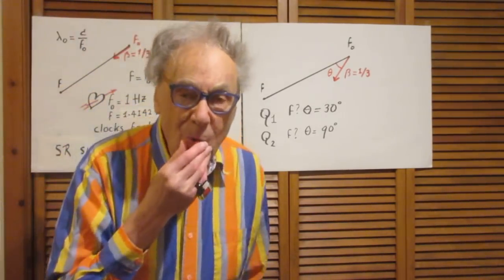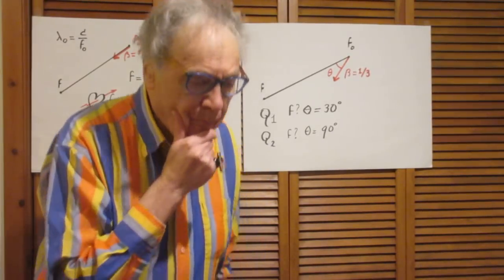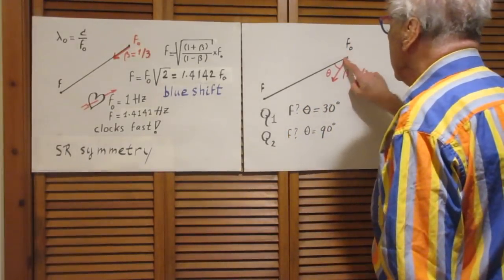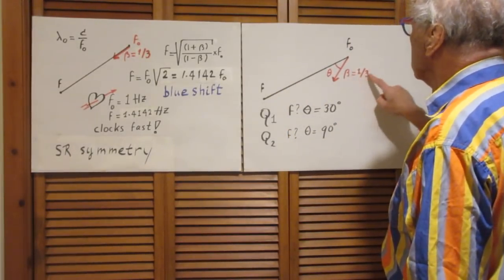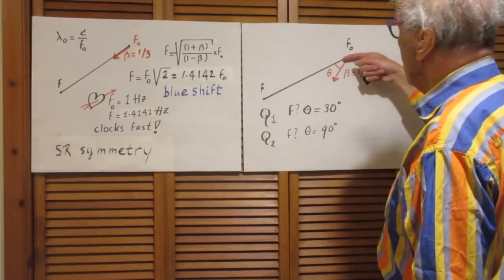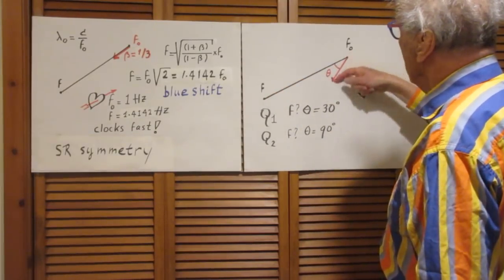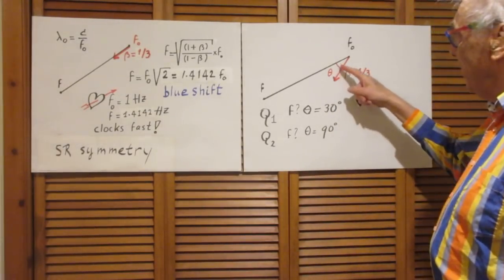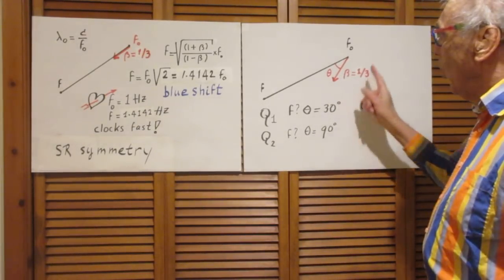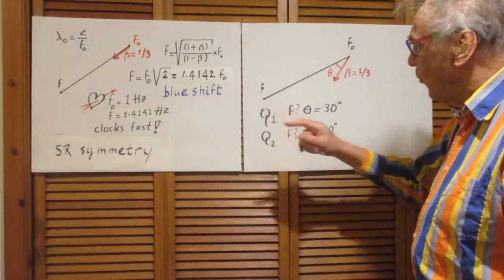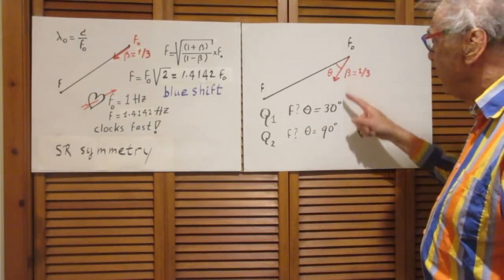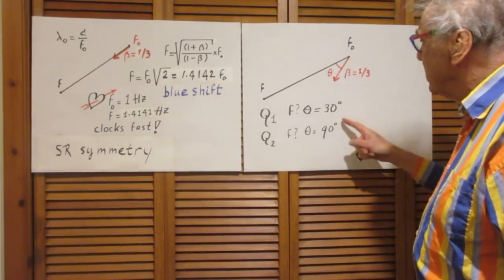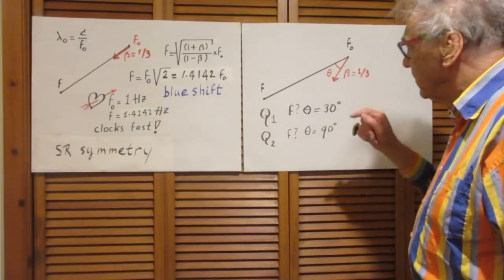Now comes my question. Susan is again moving towards Walter with 1/3 the speed of light, but not along this line — now this angle is theta. The question is: if theta is 30 degrees, what is the frequency that Walter will receive? And then independently, a second question: what is the frequency that Walter will receive if the angle is 90 degrees?